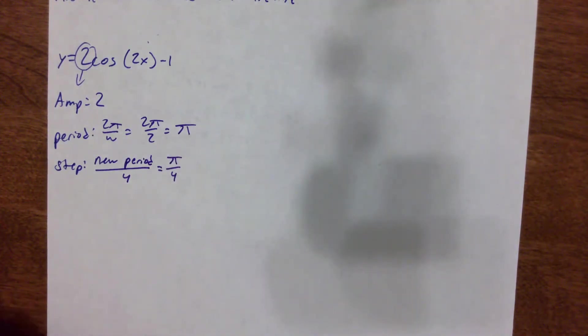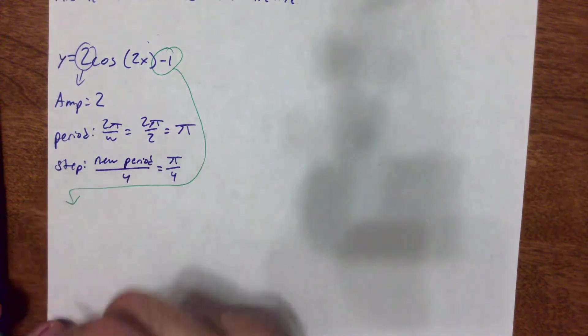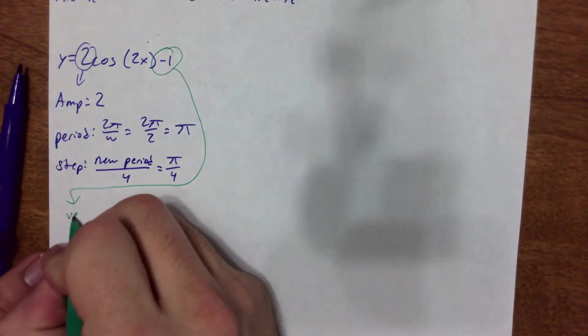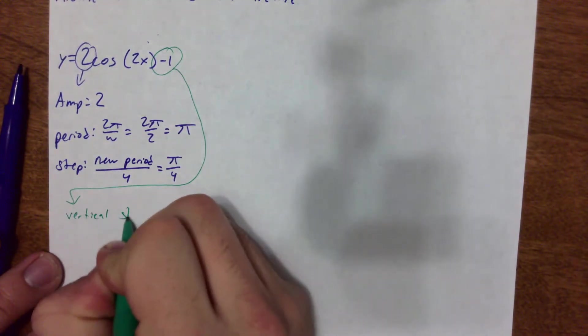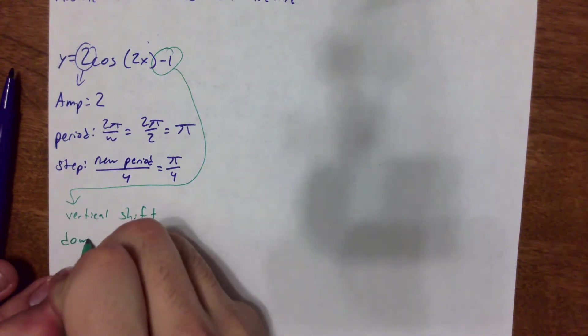We do have one new transformation here. It is this minus 1 on the outside. That is a vertical shift. And like all vertical shifts we've done this year, it behaves like we would expect it to. So minus 1 would move it down one unit.